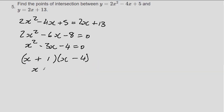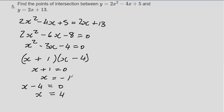From the factors: x plus 1 equals 0, so x equals minus 1; and x minus 4 equals 0, so x equals 4. When x equals minus 1, substituting into the quadratic: minus 1 squared is 1 times 2 is 2, minus 4x becomes plus 4, so 2 plus 4 plus 5 equals 11, giving y equals 11. Sanity check in the second equation: 2 times minus 1 is minus 2, and 13 minus 2 is 11. Confirmed.